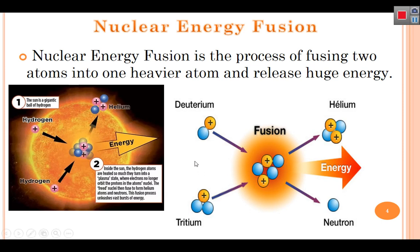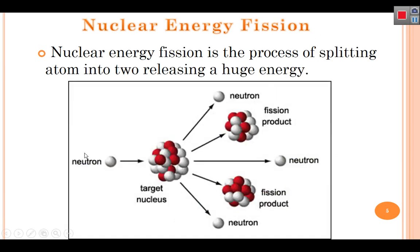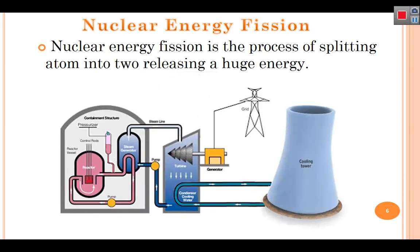In the sun there is nuclear fusion — hydrogen fuses into helium and energy is produced in the core of the sun. Nuclear fission is the process of splitting atoms: a large atom is split into smaller atoms and huge energy is produced. This process is used to generate electricity.